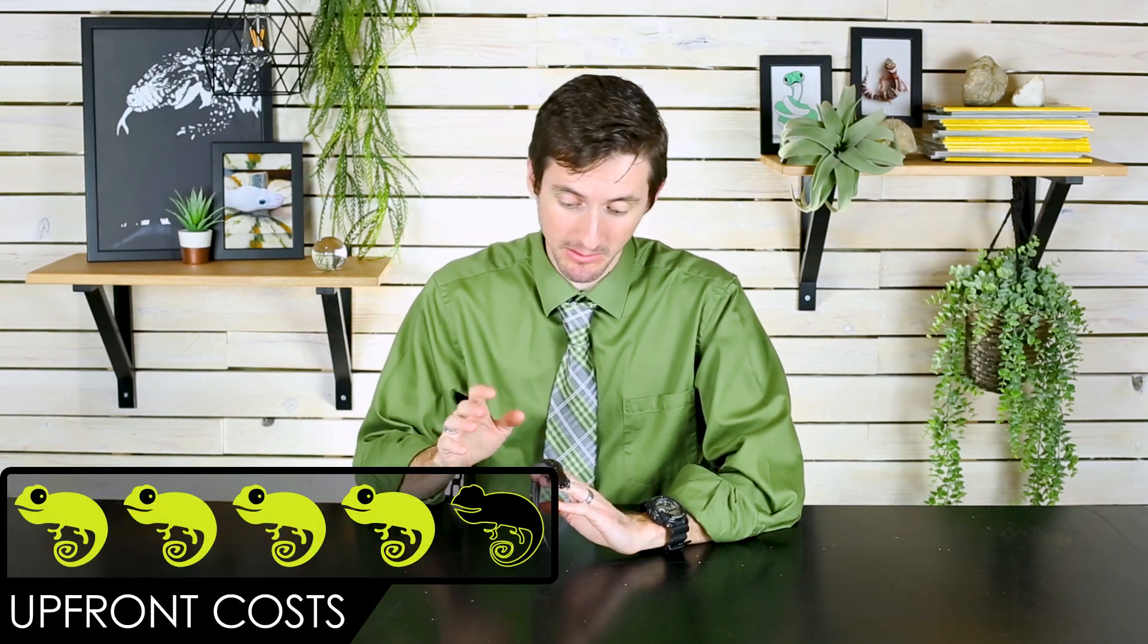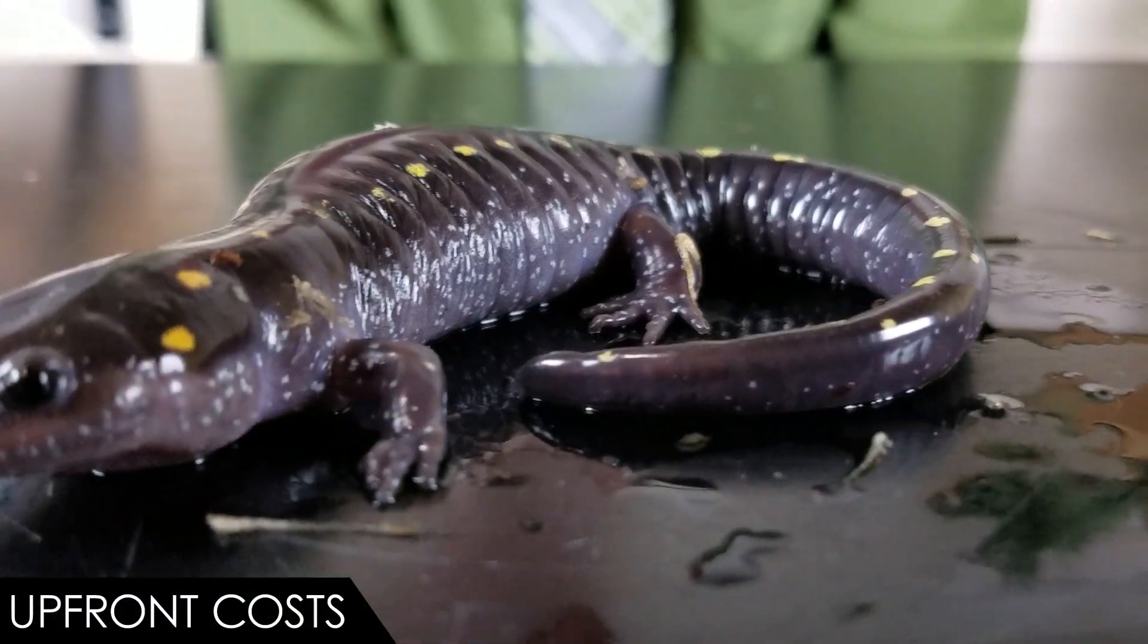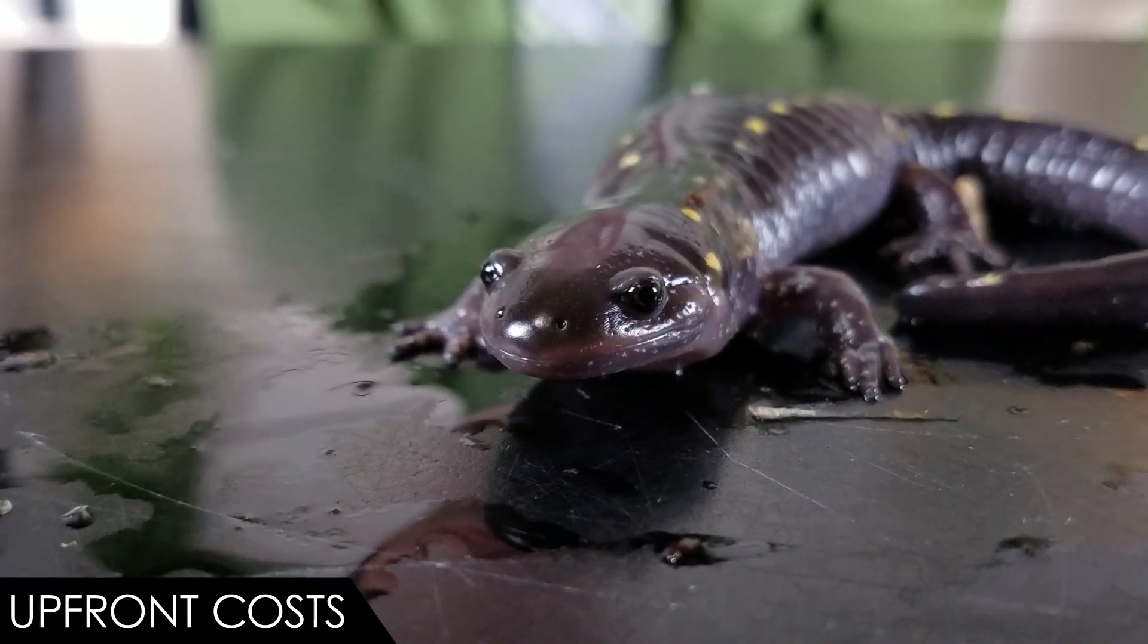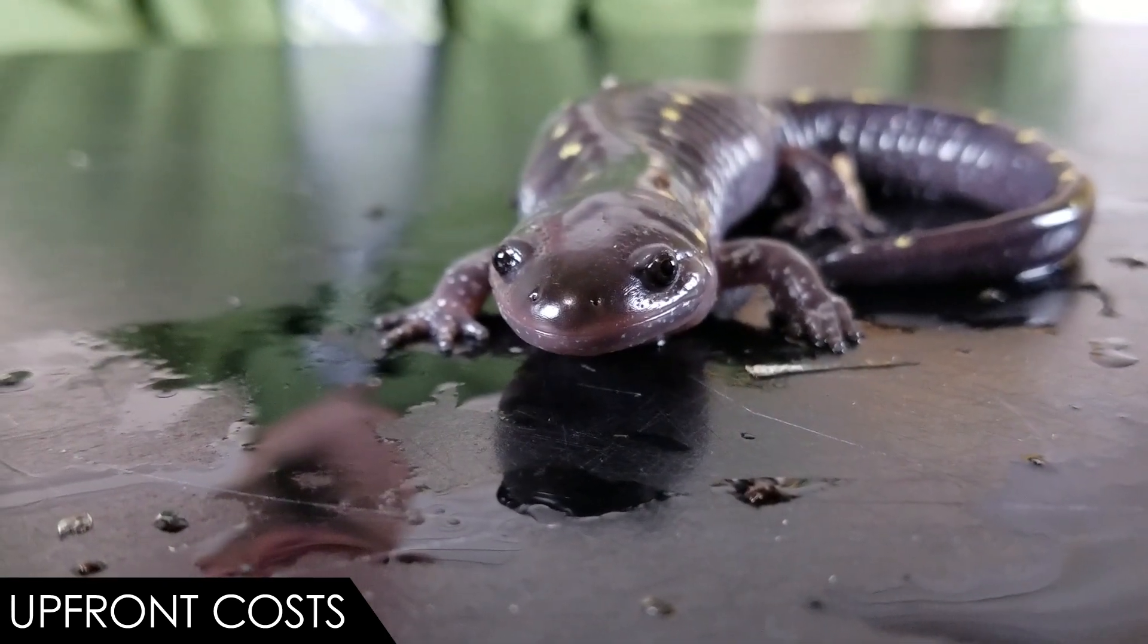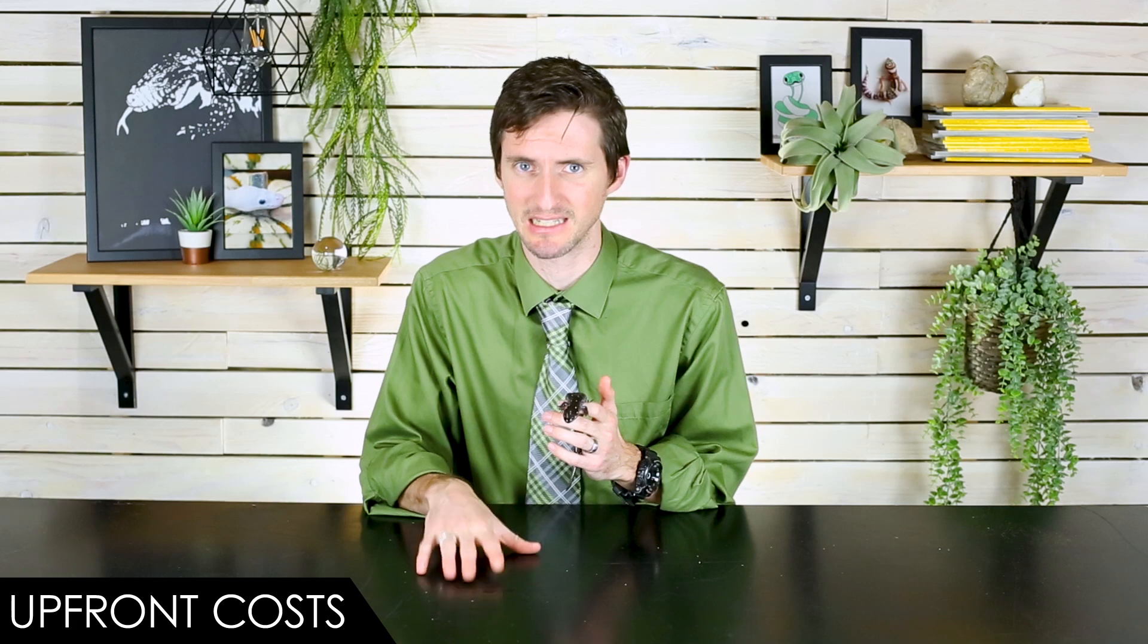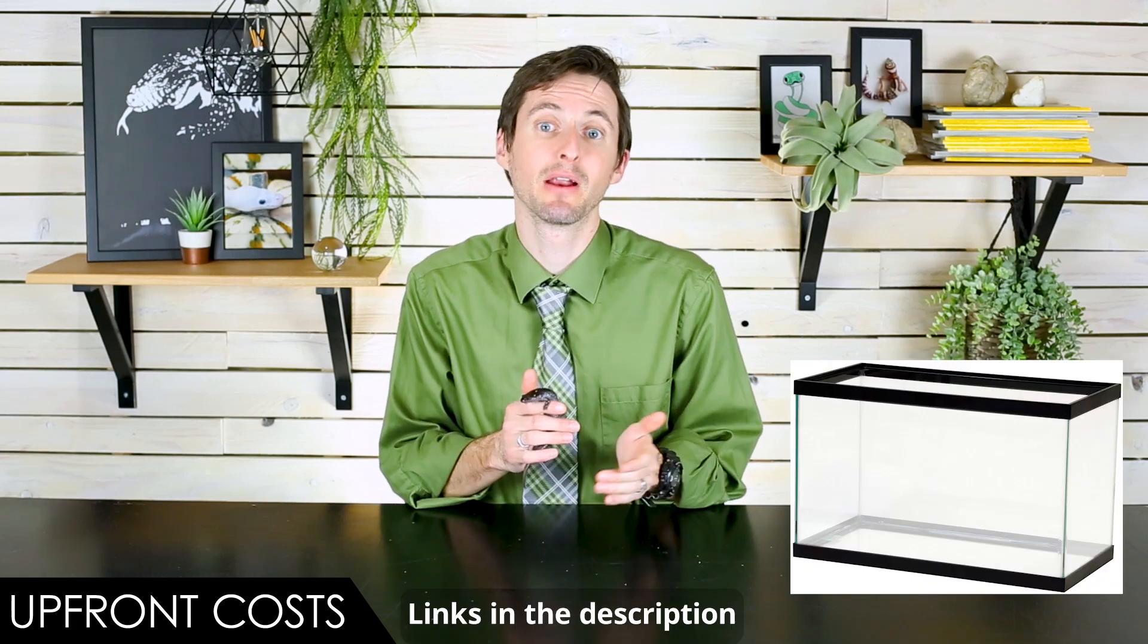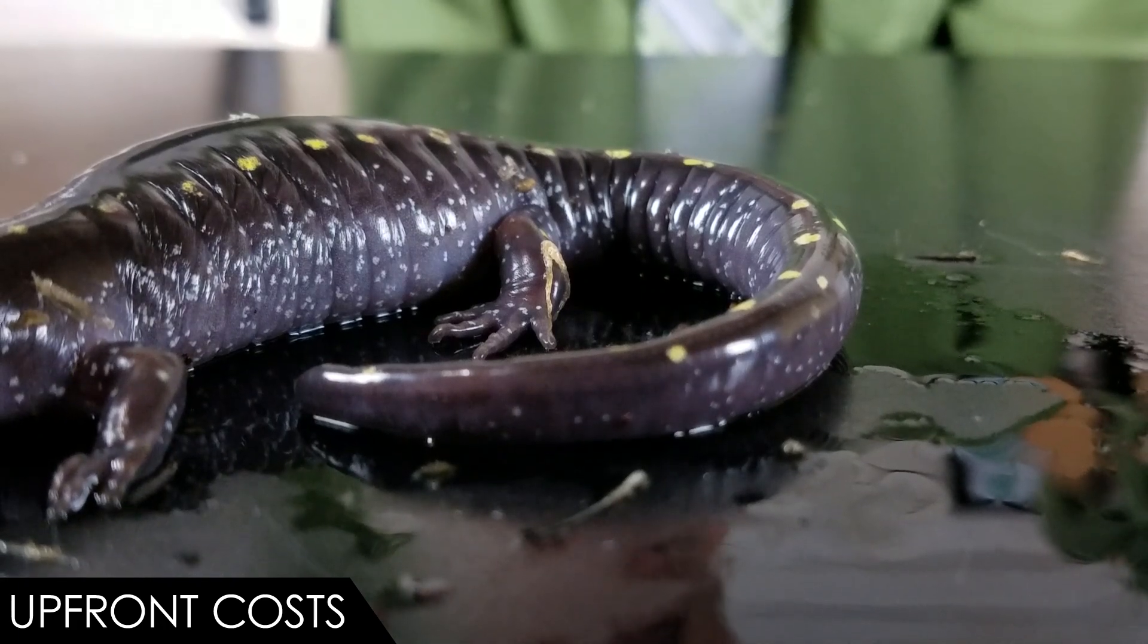When it comes to upfront costs, we give the spotted salamander a score of 4 out of 5. When it comes to buying the animal itself, it's one of the less expensive salamanders you could possibly get. There probably are a few that are cheaper, but this is a fairly affordable animal. The enclosure can be very inexpensive, especially if you go with a tub. You could make a glass enclosure that is really beautiful and amazing. That'll cost some money, but it's still not an excessive amount of money for such a cool animal. I would recommend a glass enclosure with a good lid.